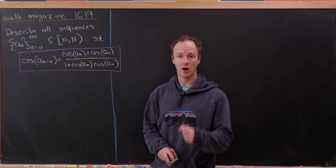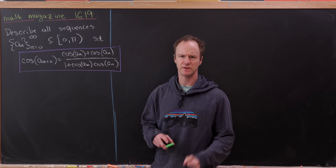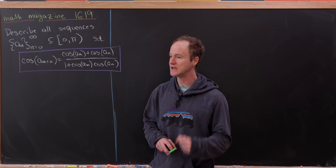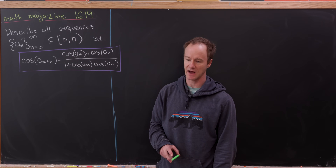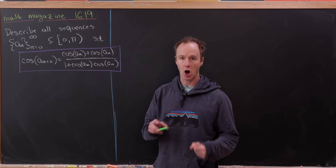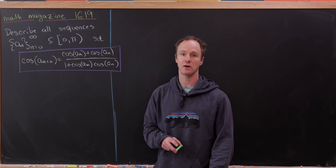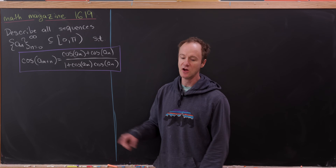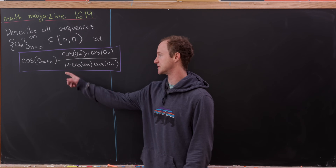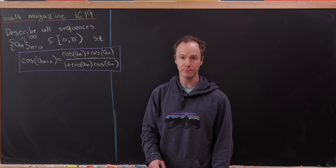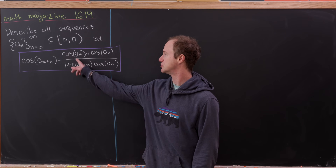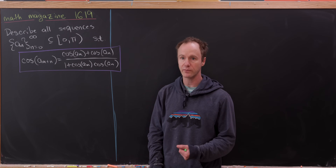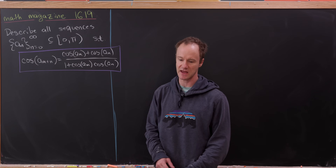We want to describe all sequences of real numbers, which we'll denote a_n. It's important that this sequence is a subset of the interval from zero to pi — in other words, all of these numbers a_n are between zero and pi, including zero but not including pi. They satisfy the recursion: cosine of a_{m+n} equals (cos(a_m) + cos(a_n)) / (1 + cos(a_m)·cos(a_n)).